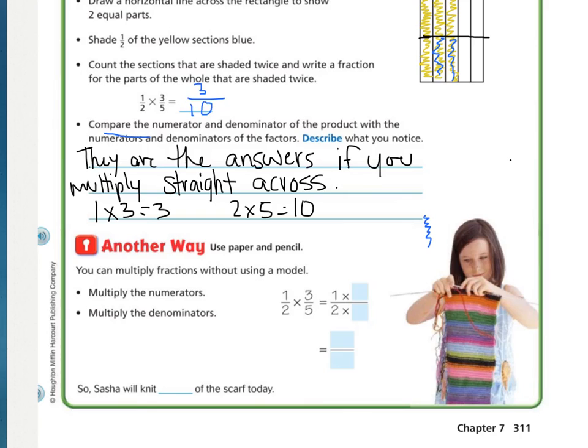Let's look at this another way, using the paper and pencil, which is using the traditional algorithm. You can multiply fractions without using a model. You multiply the numerators, and then you multiply the denominators. In this case, we have one times three, and they're just rewriting it right here. One times three, and then two times five, and then what's your answer? One times three is three, and two times five is ten.